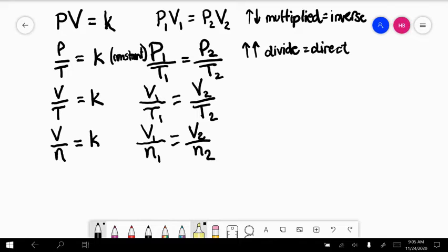So now let's combine all of these because we've got pressure, volume, temperature, and number of moles. Notice that pressure and volume are on the top, and the number of moles and the temperature are on the bottom.